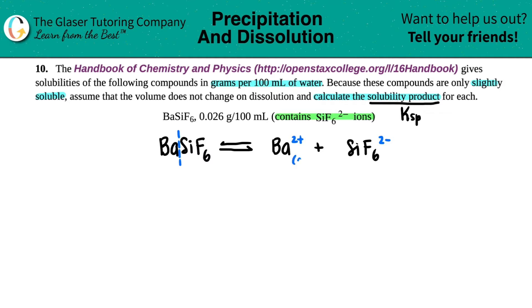Now, since we have charges, these are going to be aqueous. So Ba 2+ aqueous, SiF6 aqueous. And this compound that we're starting with is slightly soluble, which means that it's going to be a solid.